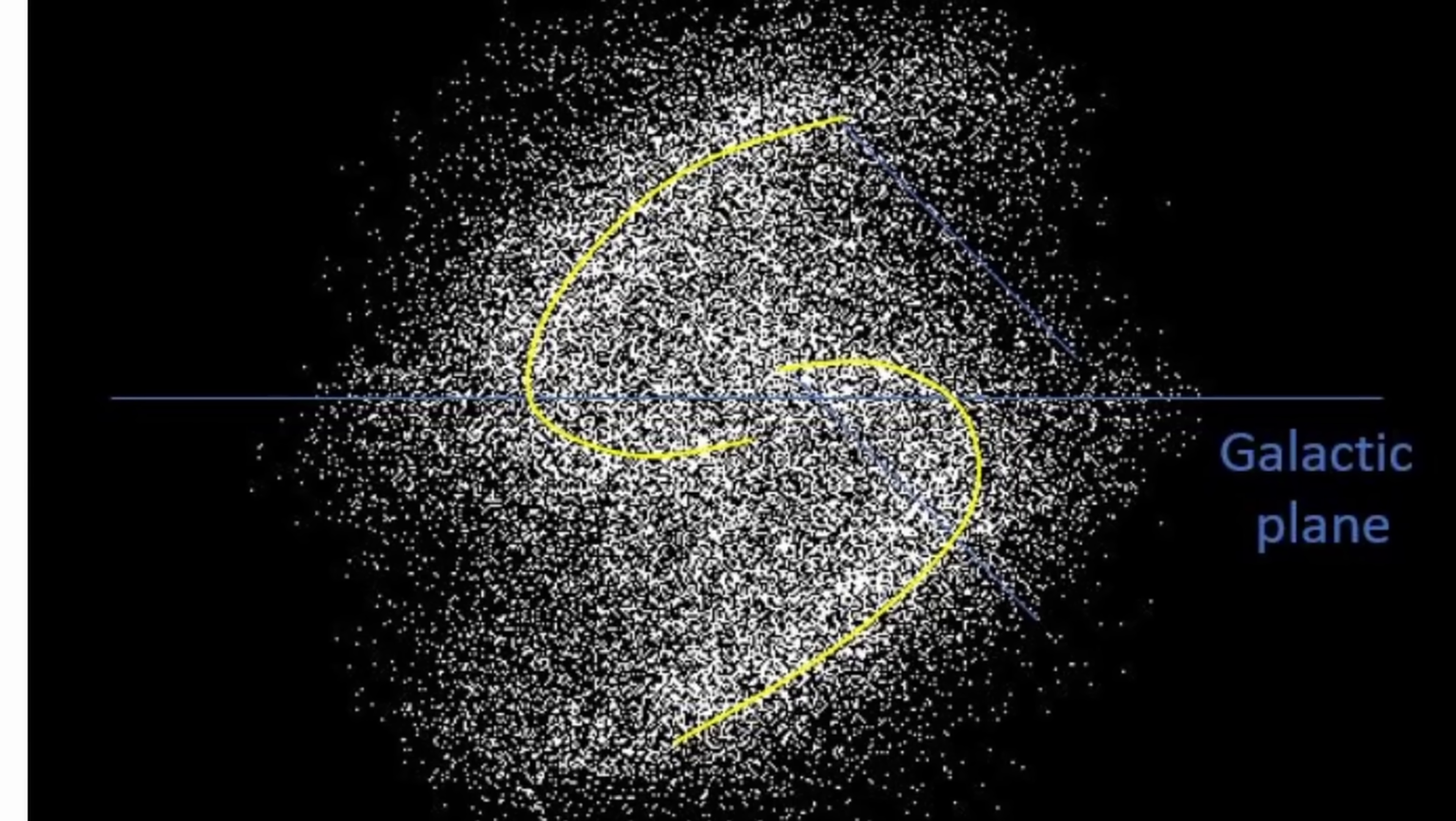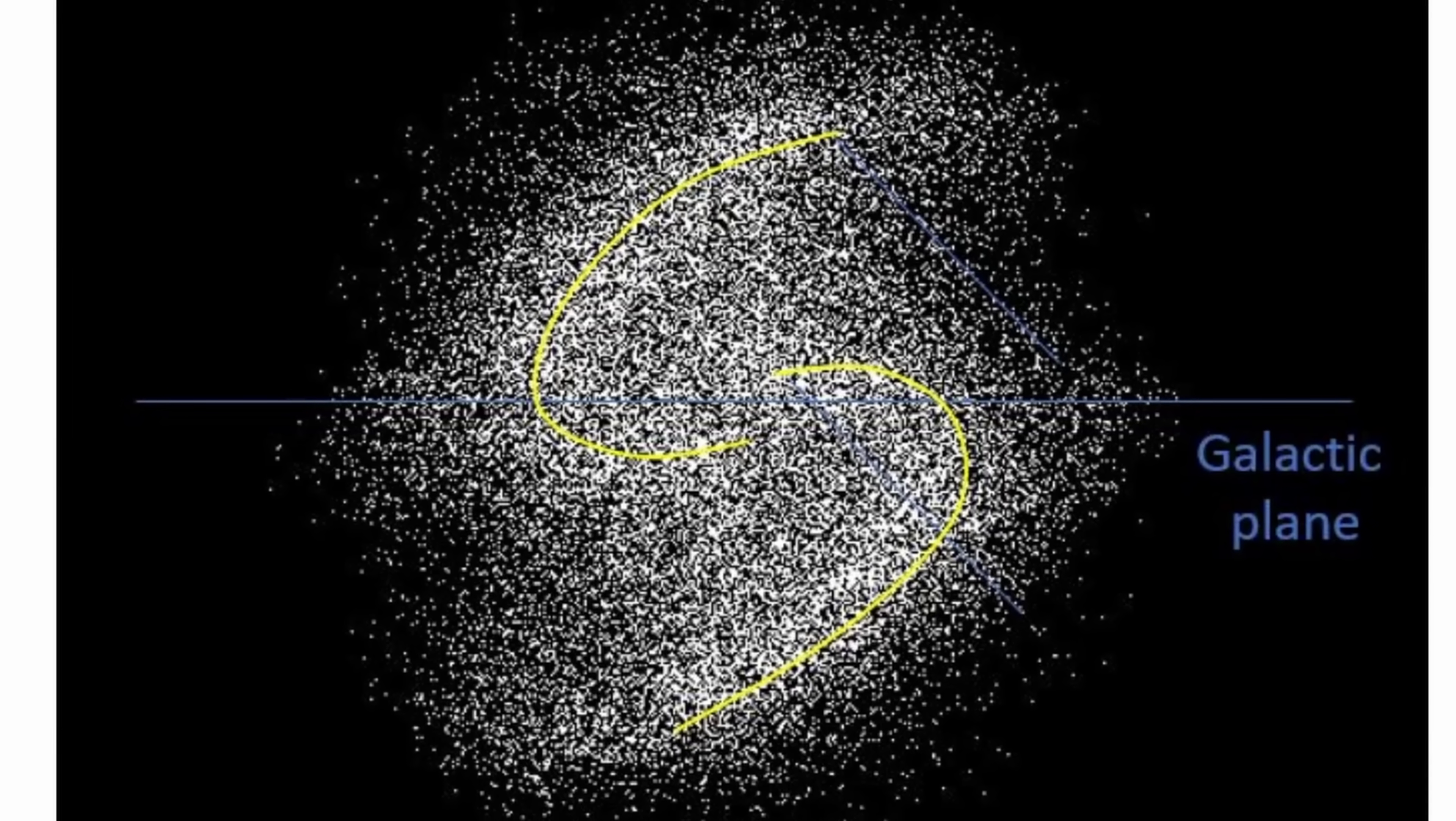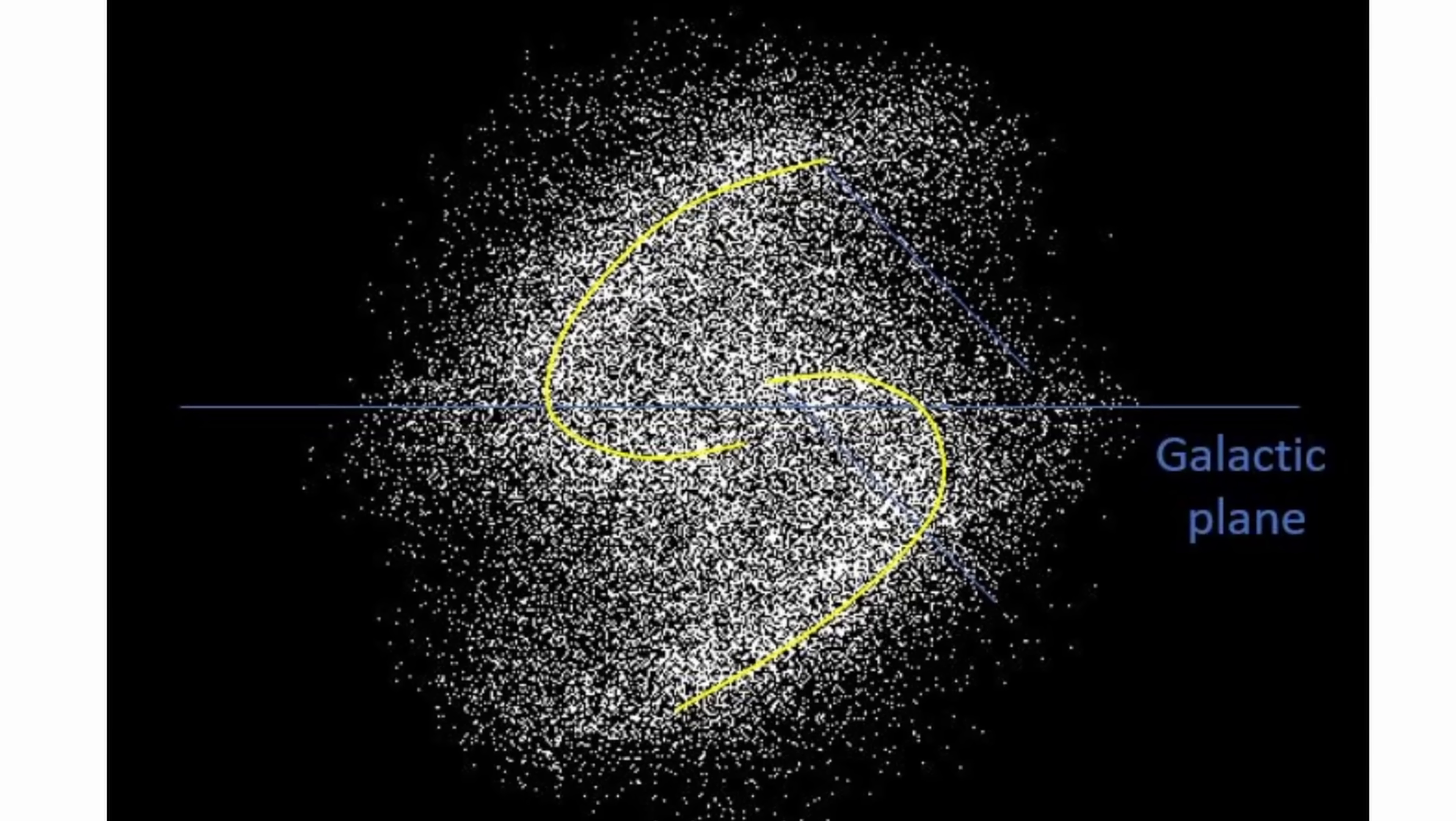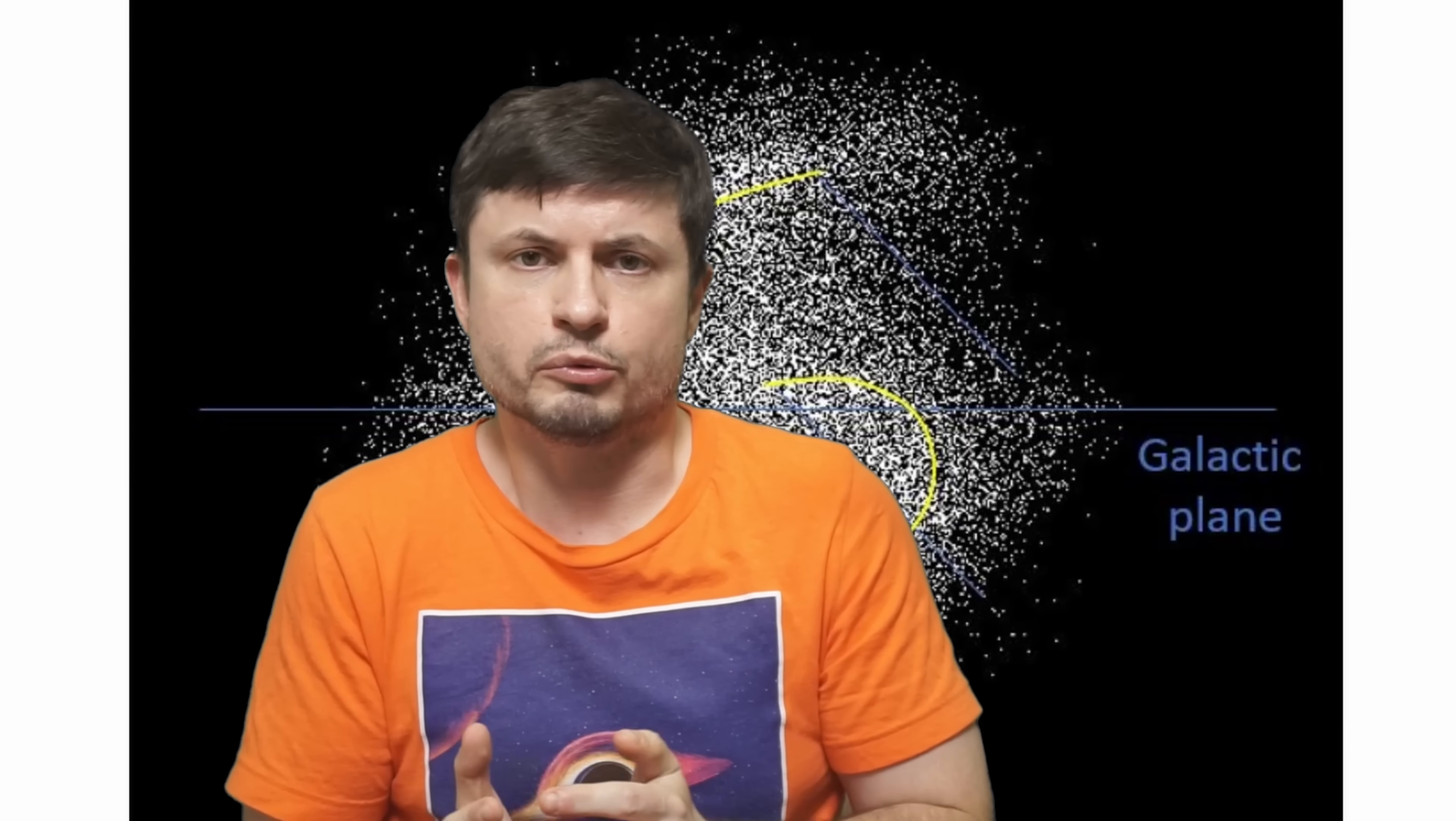Because the galactic tides very likely created something that's not a sphere. And instead the Oort cloud very likely resembles something like this. It's essentially an S shape or something that resembles galactic arms. And that's of course the most recent discovery.